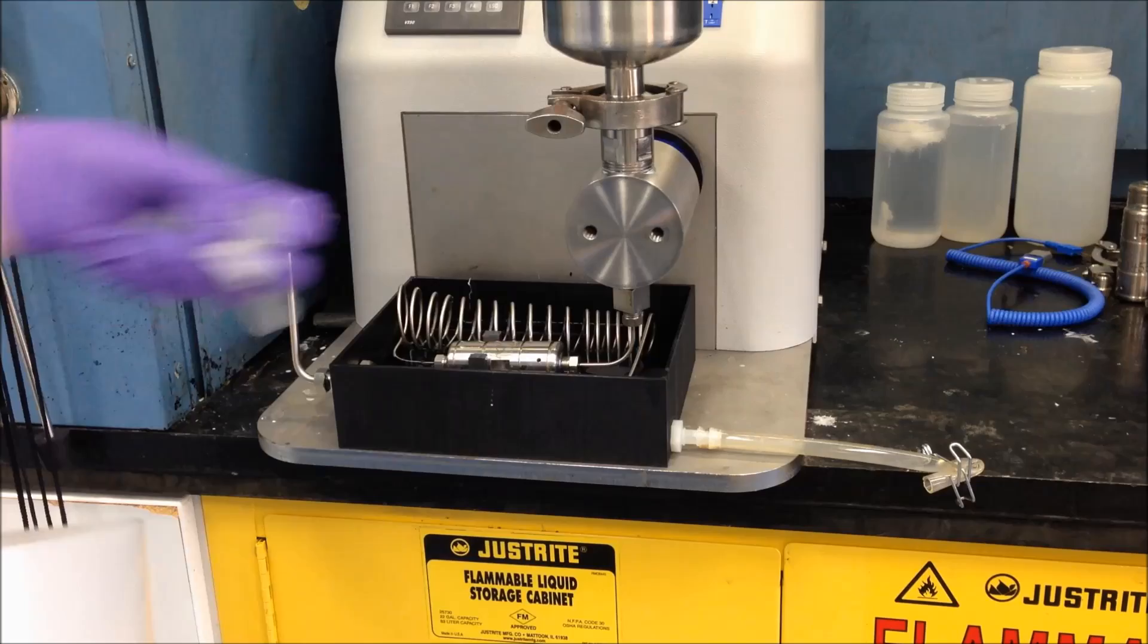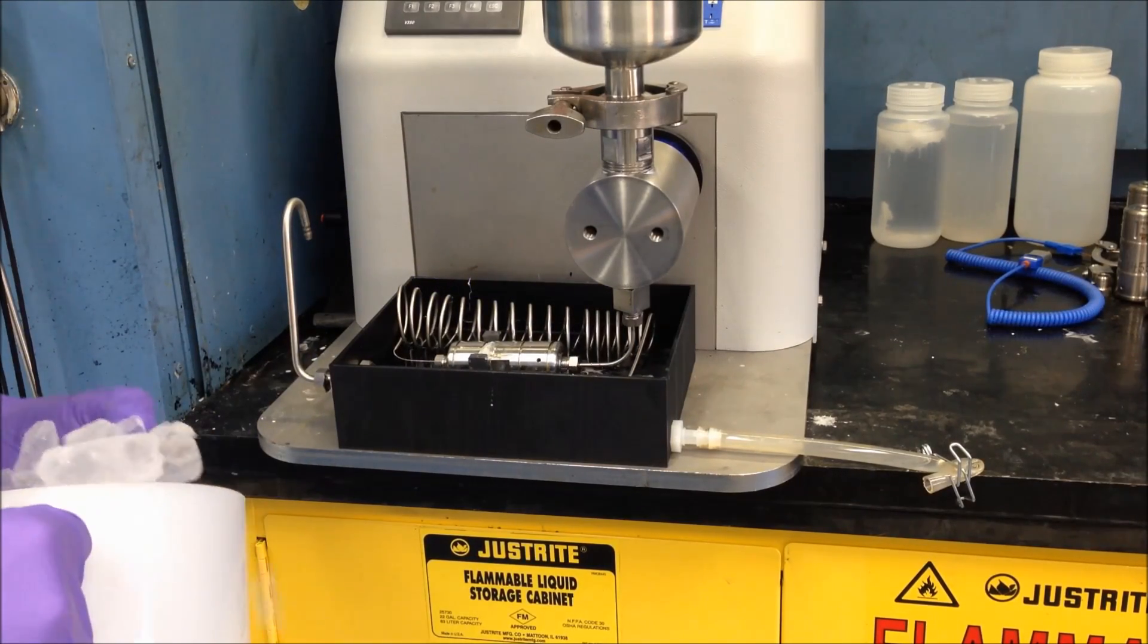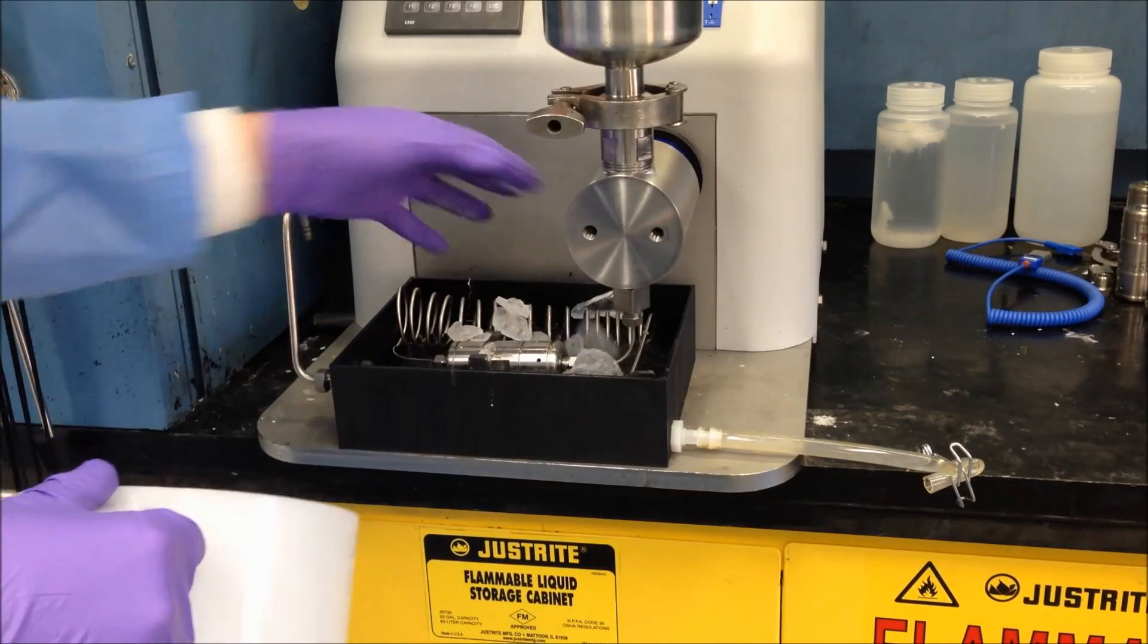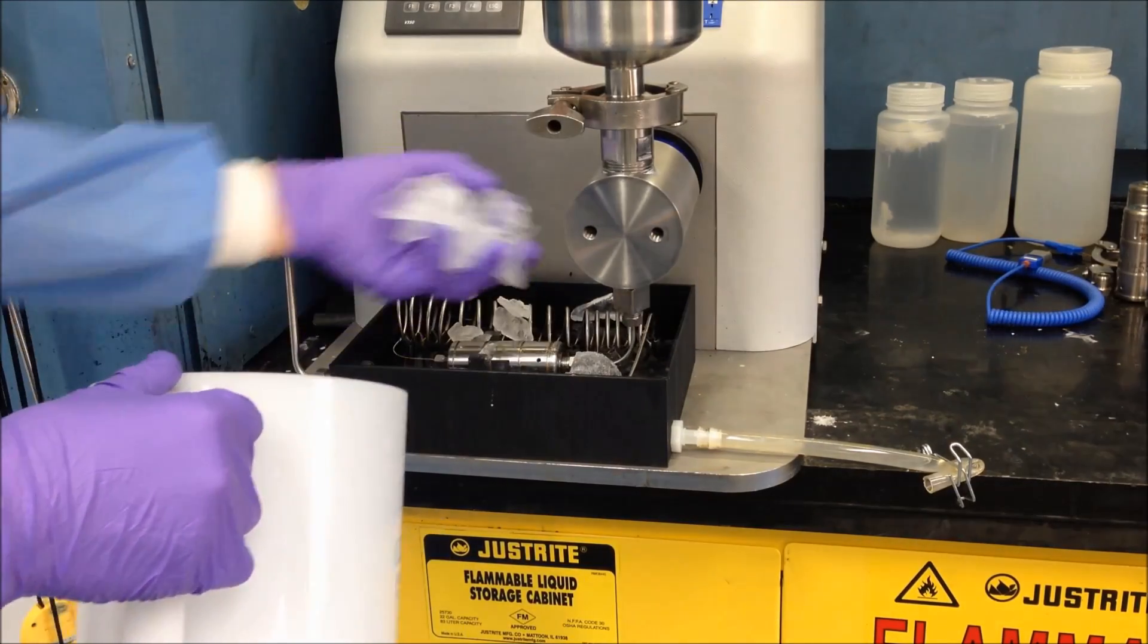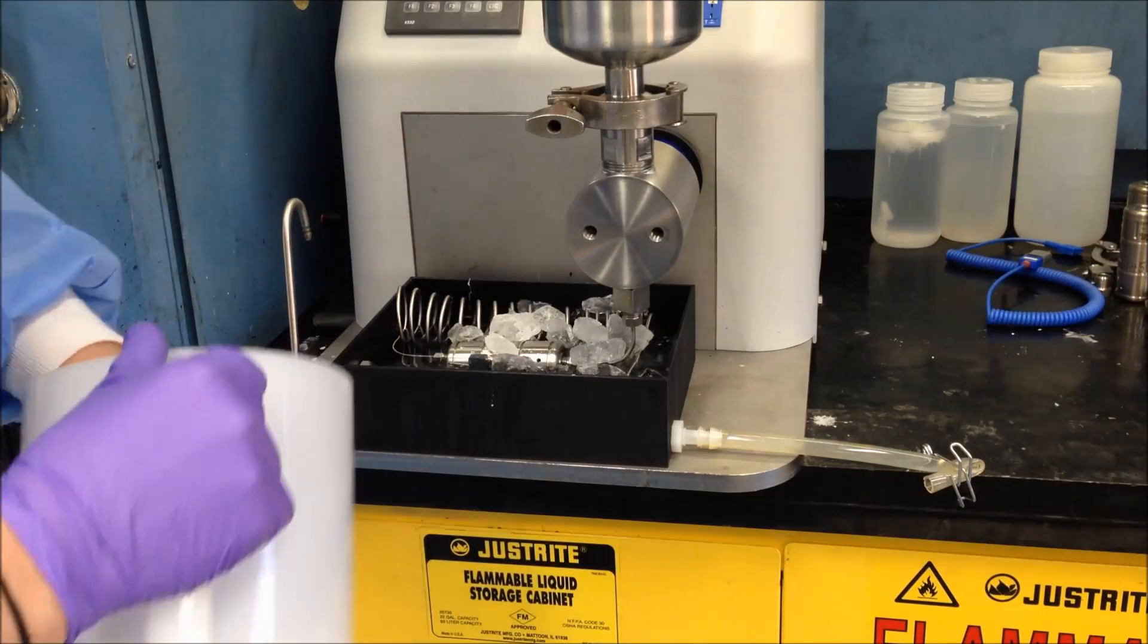While the water phase is cooling, the microfluidizer can be prepared by placing ice in the cooling tray. This will help ensure that the dichloromethane does not evaporate during processing.